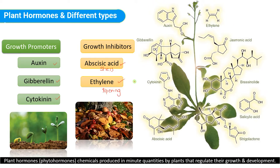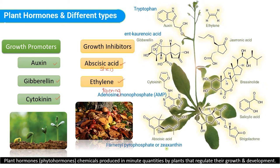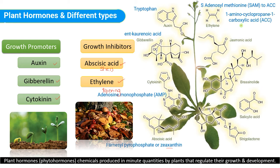The precursor of auxin is the amino acid tryptophan. Gibberellin is formed through the mevalonic pathway; acetyl coenzyme A is the precursor, but the immediate precursor is kaurenoic acid. Cytokinin is an adenine derivative with adenosine monophosphate as its precursor. Abscisic acid's precursor is zeaxanthin. Ethylene's precursor is the amino acid methionine — specifically S-adenosylmethionine — which is converted to ACC (aminocyclopropane-1-carboxylic acid), the immediate precursor of ethylene. Jasmonic acid, brassinolide, and salicylic acid are primarily involved in plant defense.